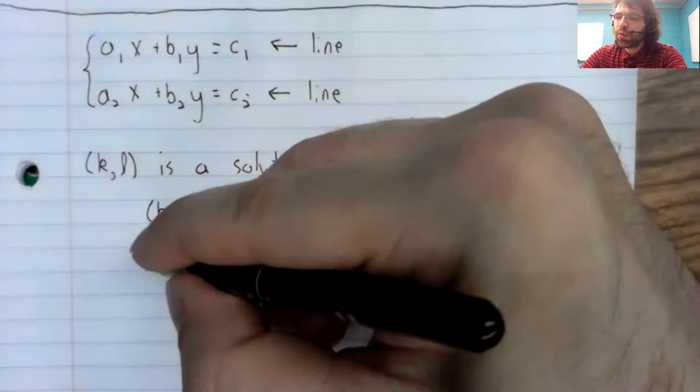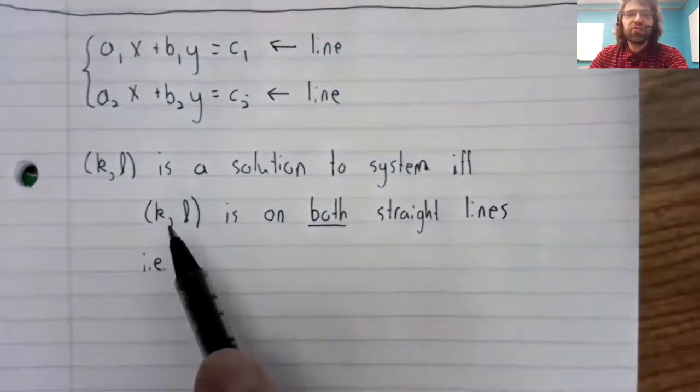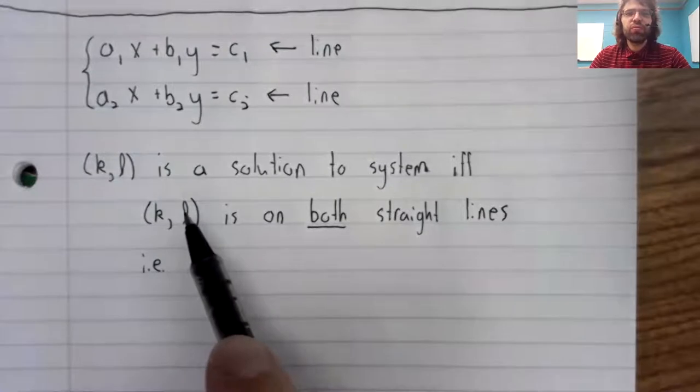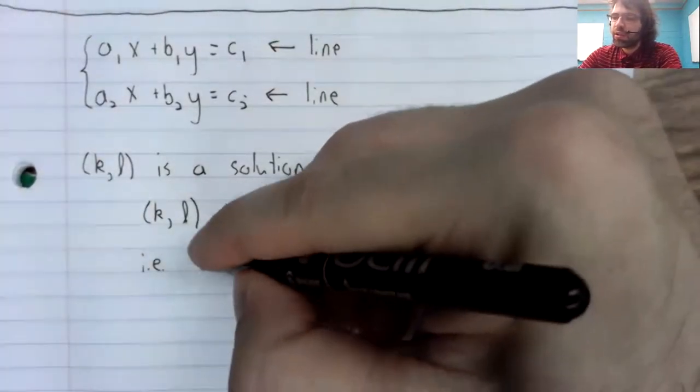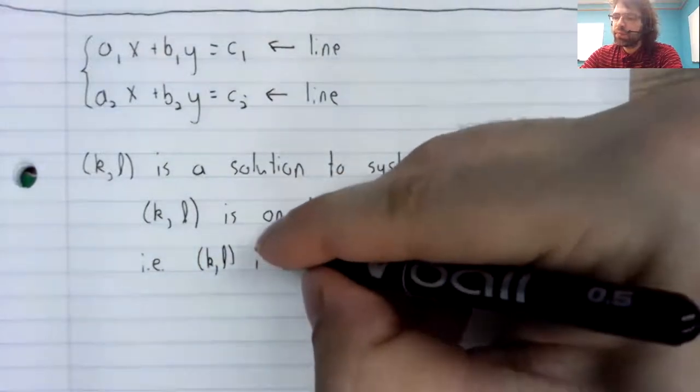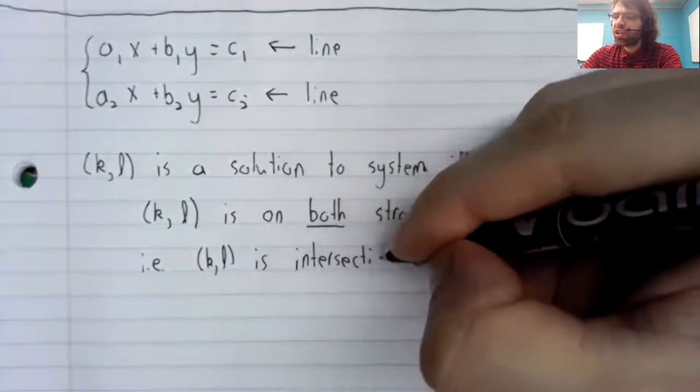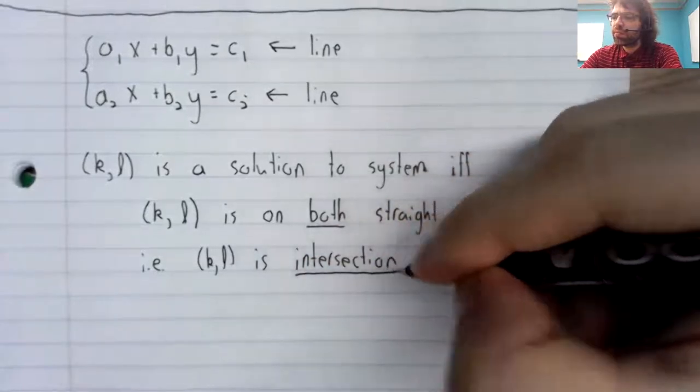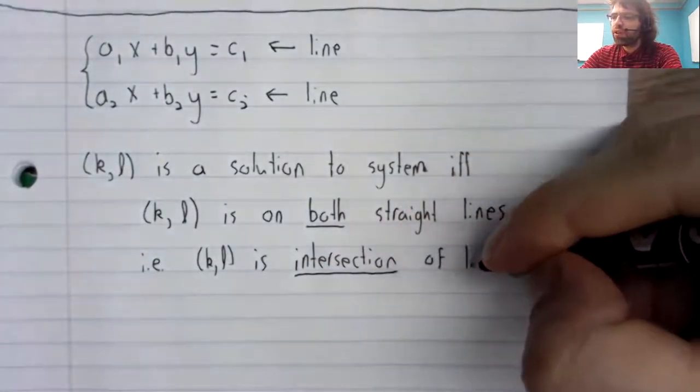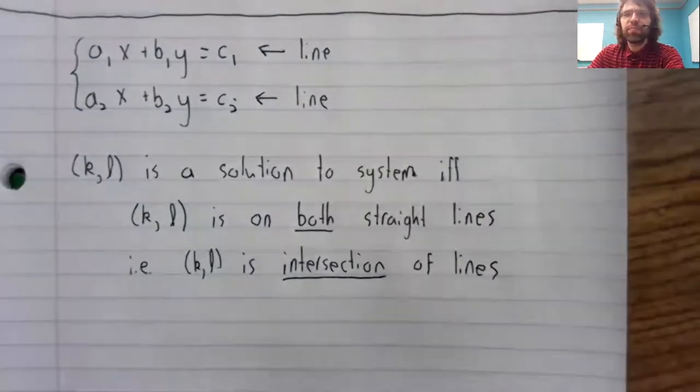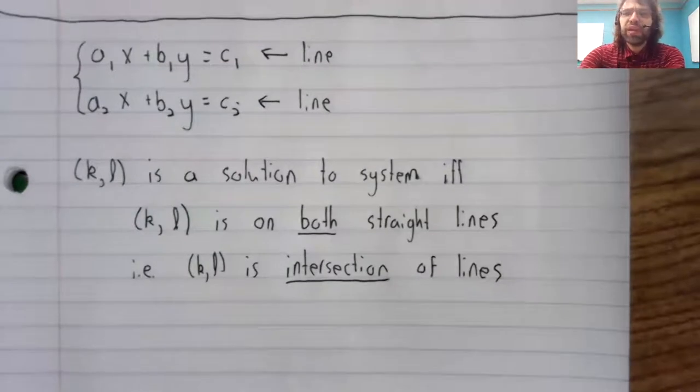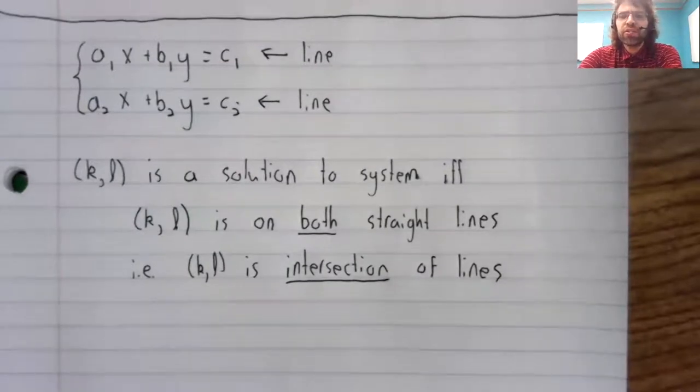In other words, this is a solution if and only if it is the intersection of the lines. And now we asked some questions earlier, things like does every system have a solution? We're now in a position to answer that graphically.